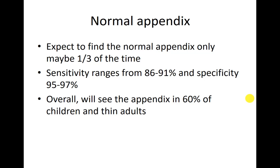Unfortunately, a normal appendix is not necessarily easy to see. In pediatrics, finding a child's appendix and saying it's normal happens about a third of the time. Another third of the time it's actually appendicitis, which means a third of the time we just don't find it. Even for sonographers who do this for a living, we aren't always going to find the appendix. Sensitivity and specificity depends on patient and sonographer factors — we see the appendix better when people are skinny, thin kids, thin adults.